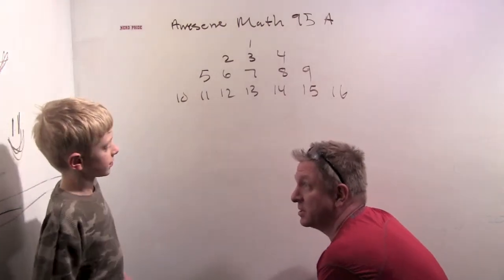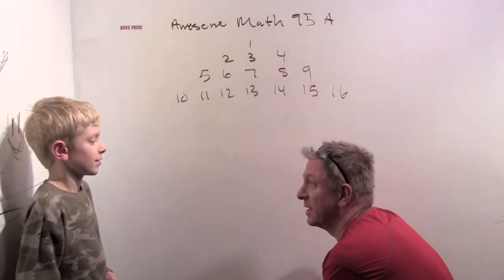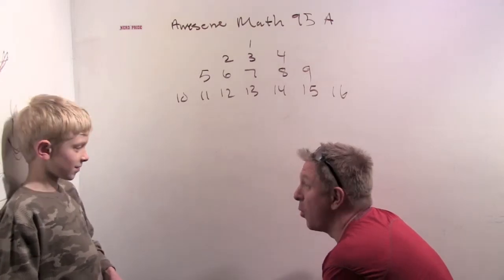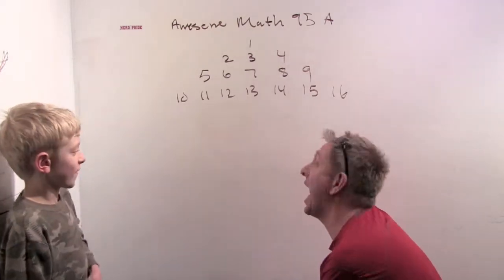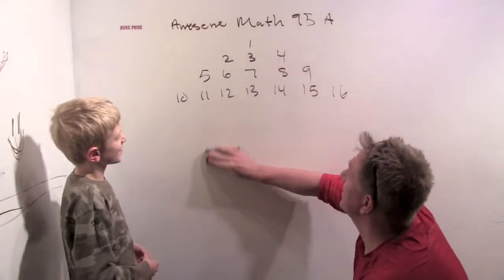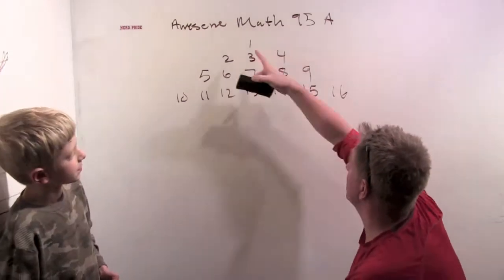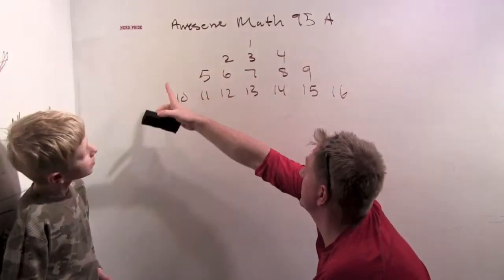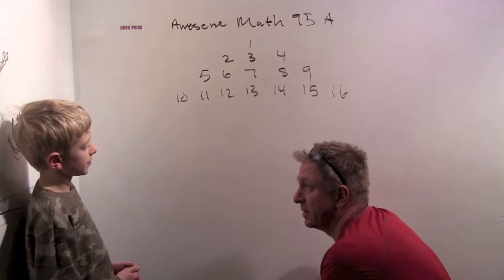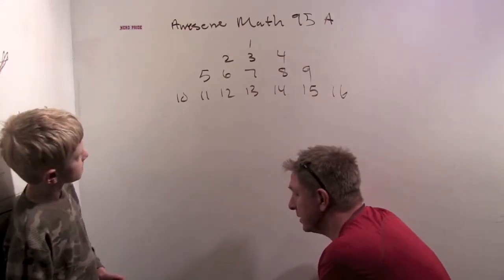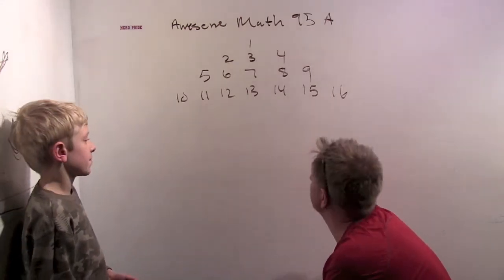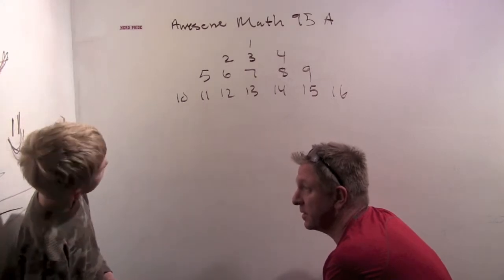13th row. I'm going to give you an ultra challenge. What's the first number in the 101st row? Alright? So this is row 1, this is row 2, row 3, row 4, etc. How in the world can we even think about solving problems like this? What do you think you need to do?